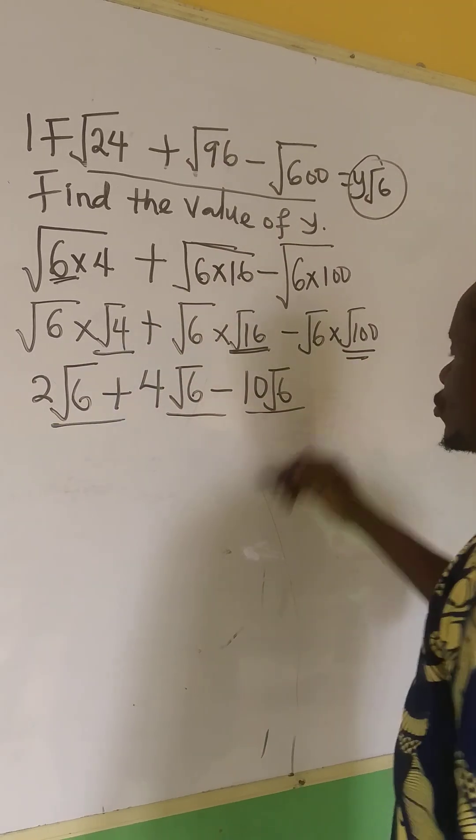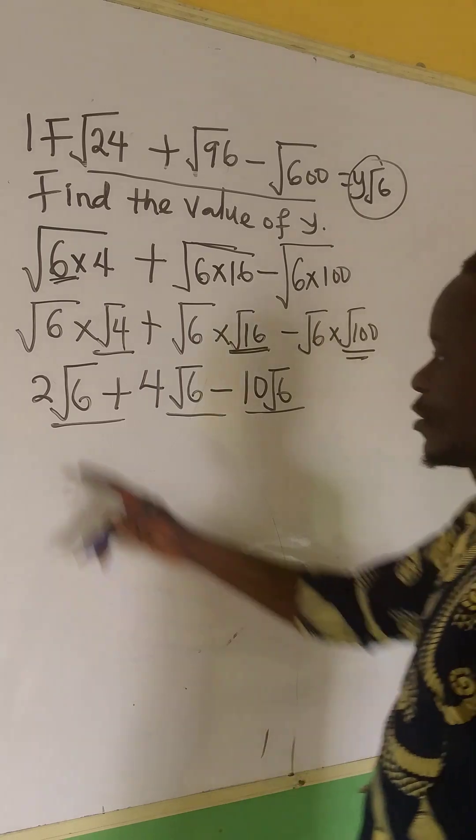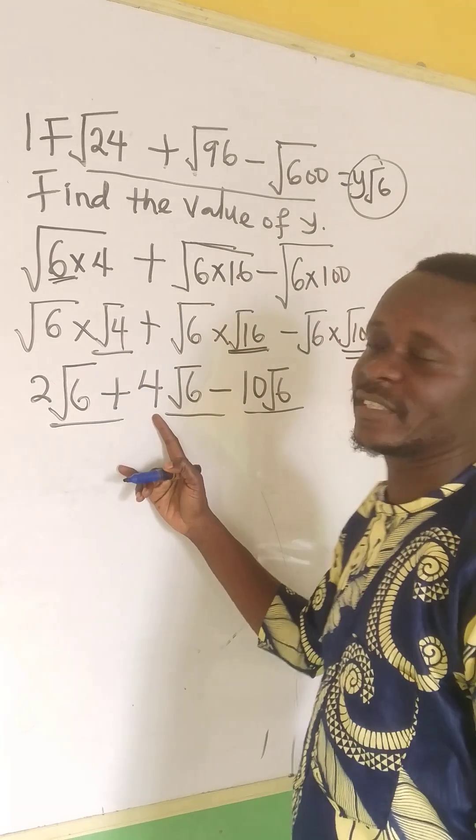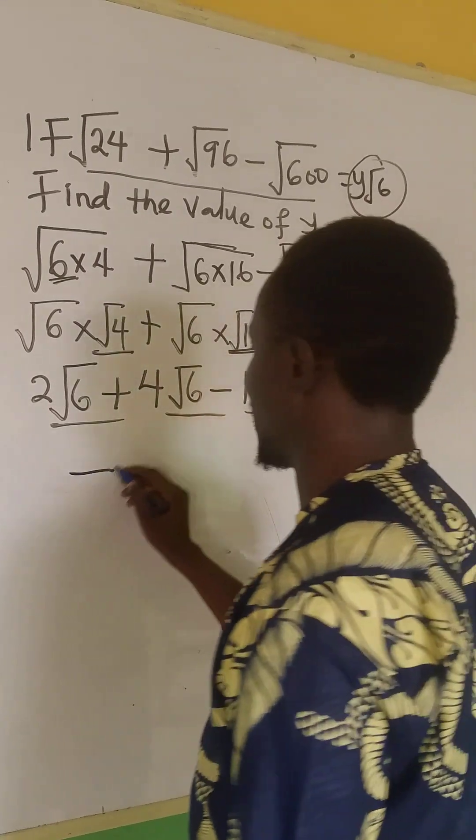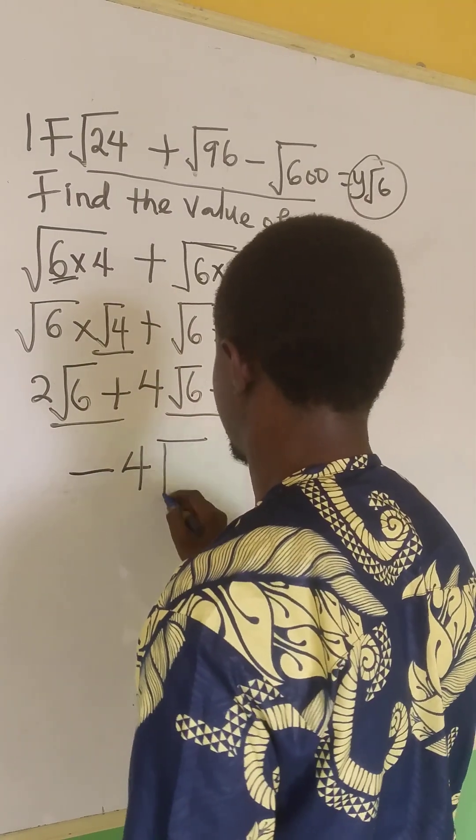So, because they have the same root, I can add or subtract. 2 plus 4 is 6. 6 minus 10 is -4√6.